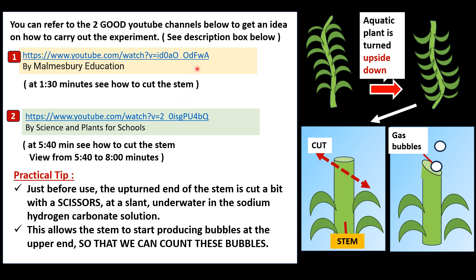You can refer to the two YouTube channels linked below to get an idea on how to carry out the whole experiment — that one is about investigating the effect of light intensity on the rate of photosynthesis. I will put the links in the description box below the video, so you can click on them.